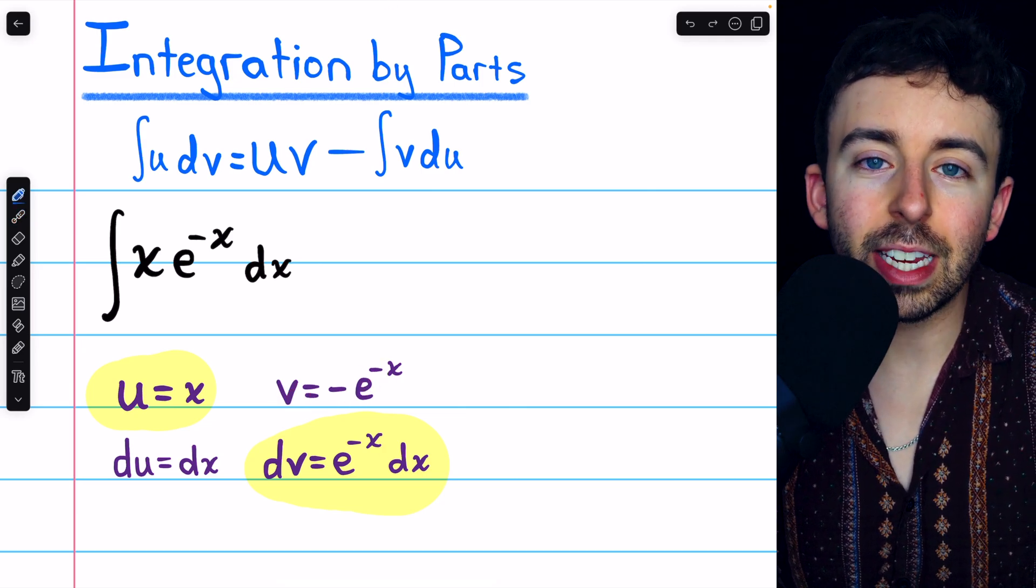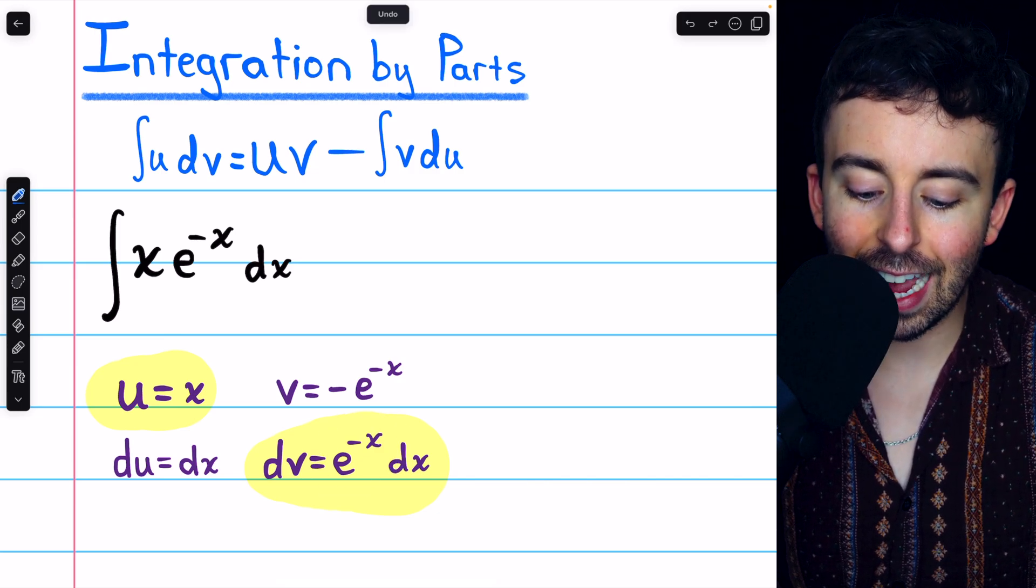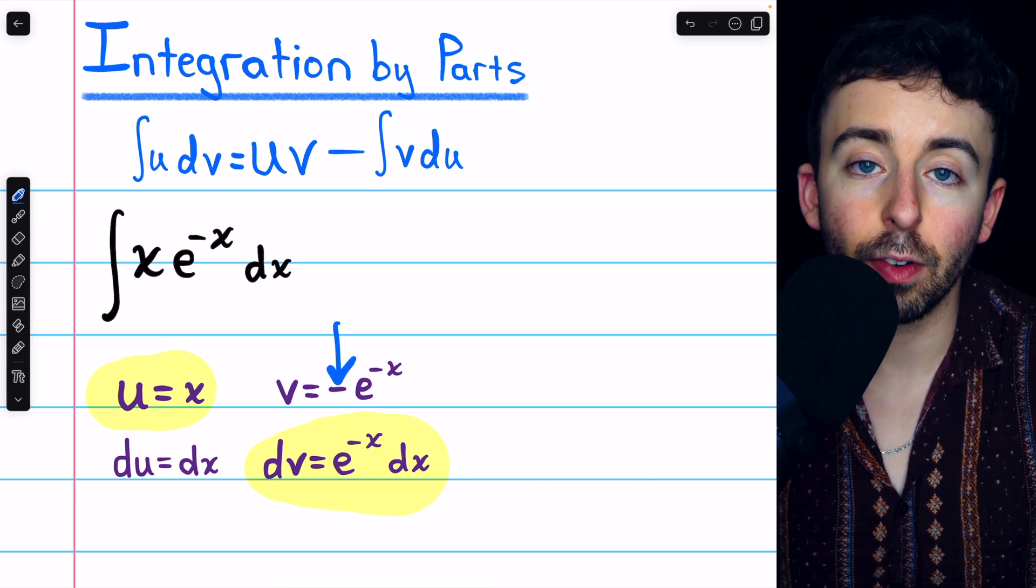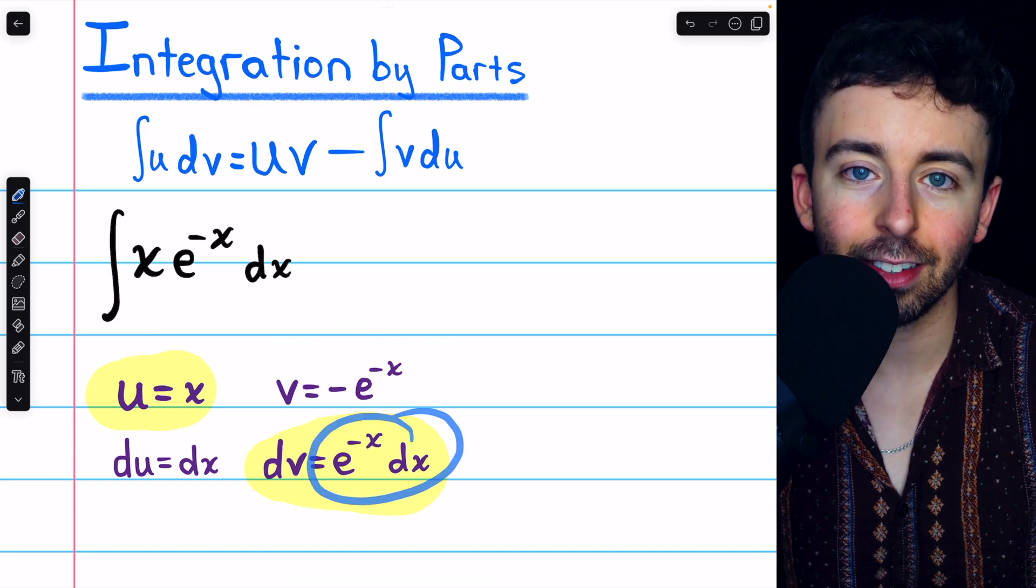Remember, the integral of e to the x is just e to the x, but in this case, we're integrating e to the negative x, which is why this negative pops out. You can take the derivative of this and check that it is e to the negative x.